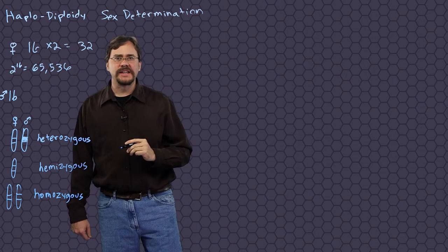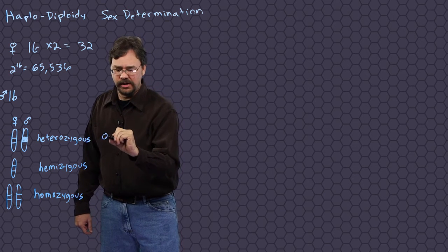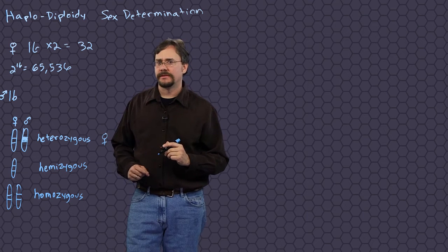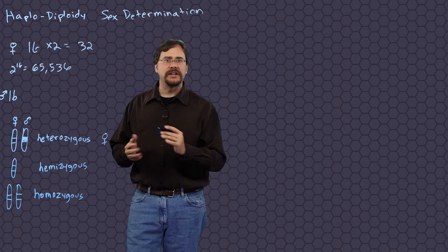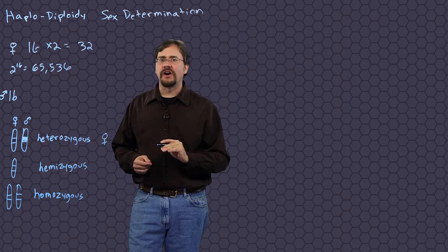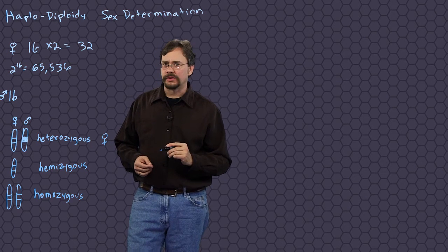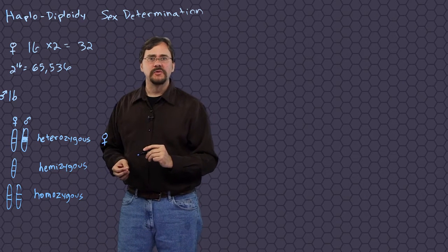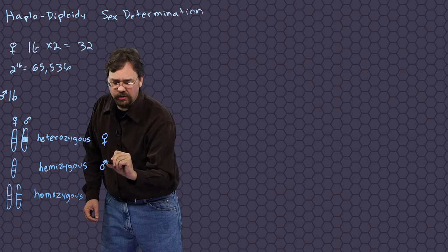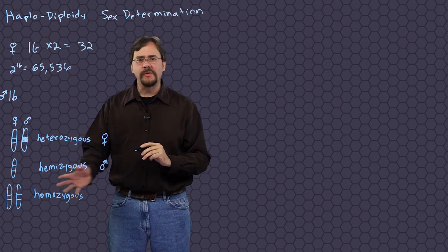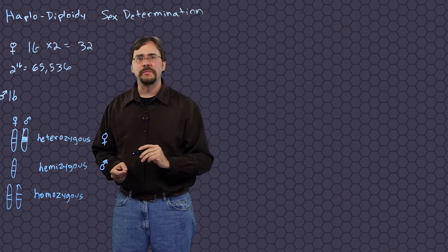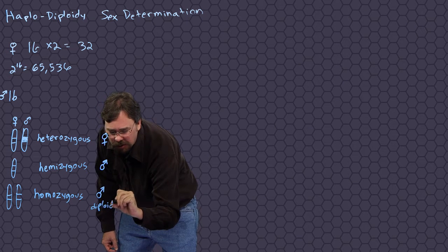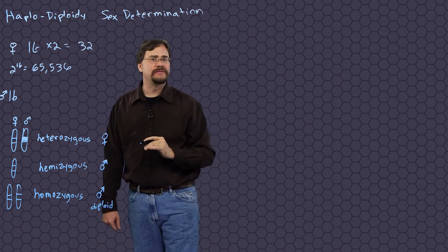If the gene is heterozygous for this trait, it will develop into a female bee — it will become a worker or potentially a new queen bee. There is no genetic difference between a worker and a queen bee; these differences are influenced by diet at a very early stage in larval development. The hemizygous condition occurs when an unfertilized egg develops into a male bee or a drone. If a fertilized egg has a homozygous condition, the result will be a drone, but it will be a diploid drone with two copies of every gene.